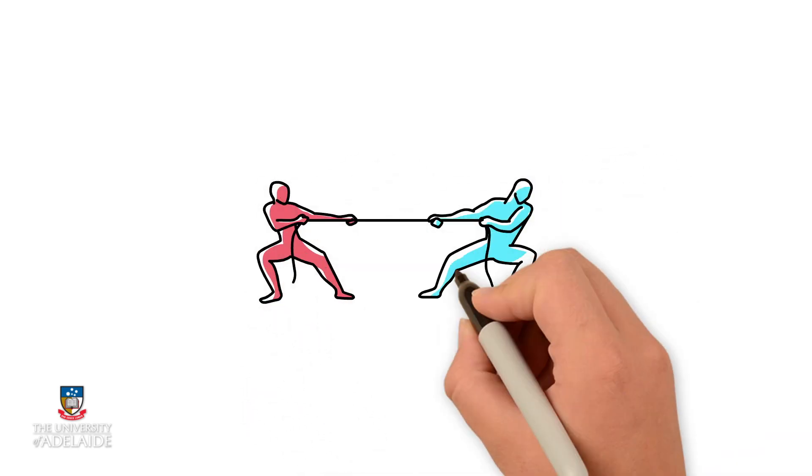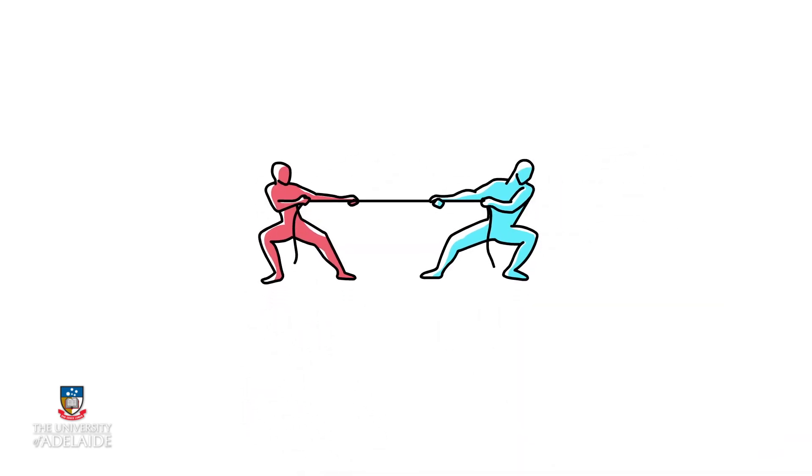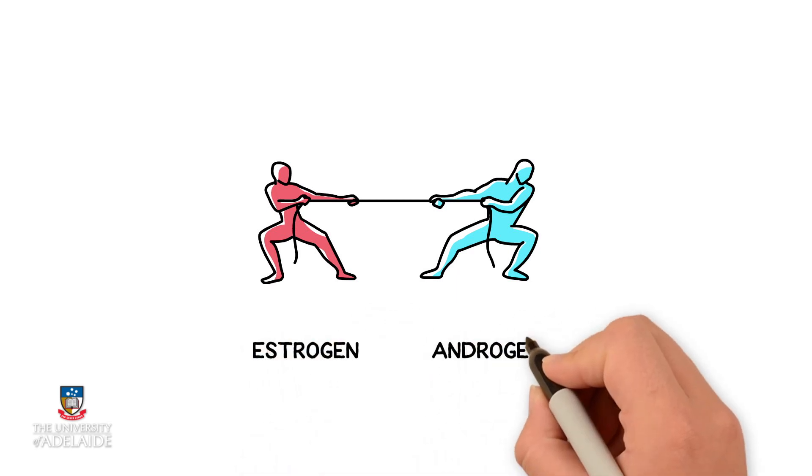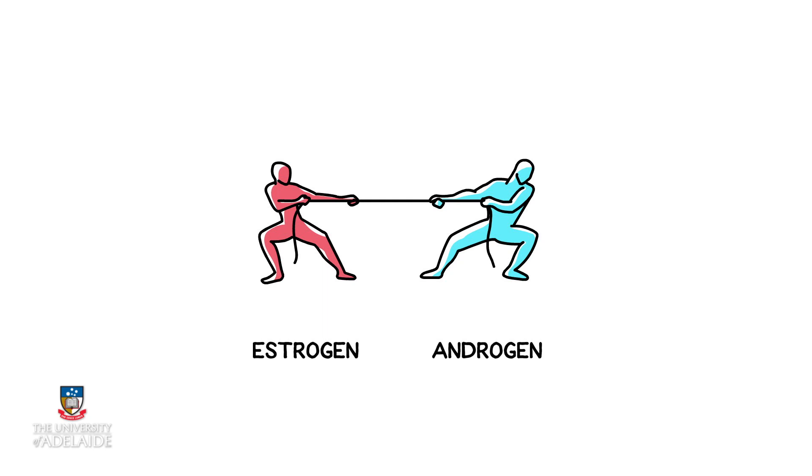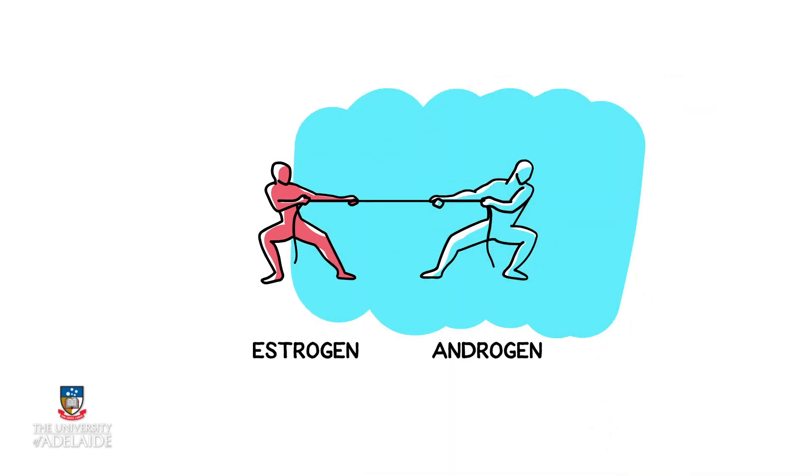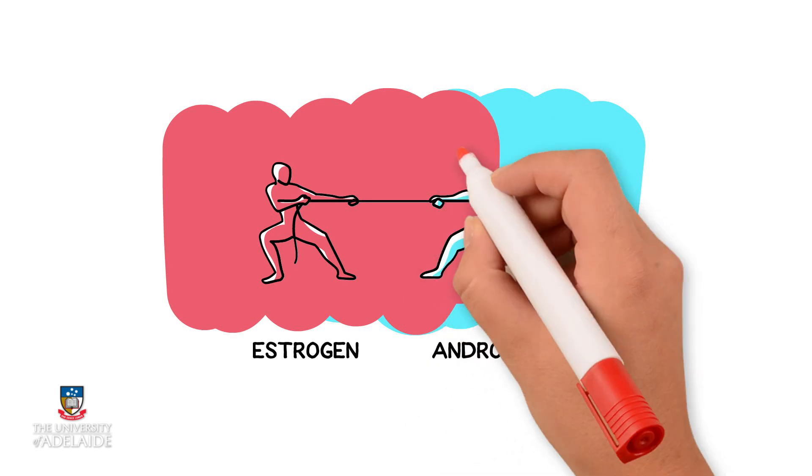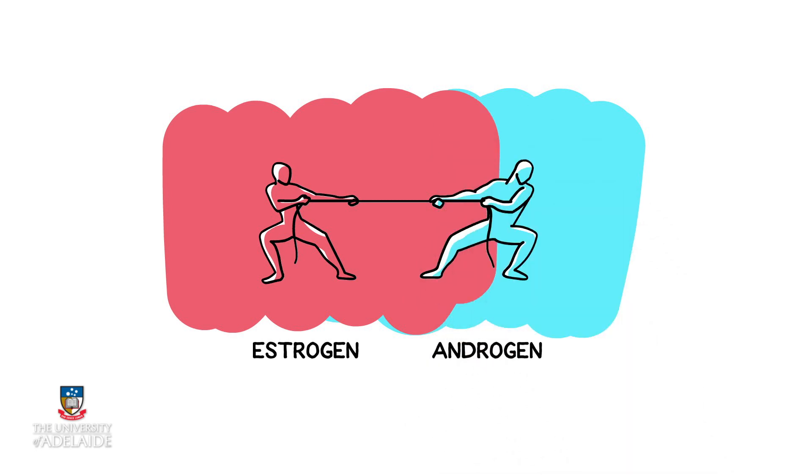You see, it all comes down to a tug of war between two vital hormones, estrogen and androgen, acting via estrogen or androgen receptors. Androgen is the stronger force in men and estrogen dominates in women. It's why women develop breasts and men don't.